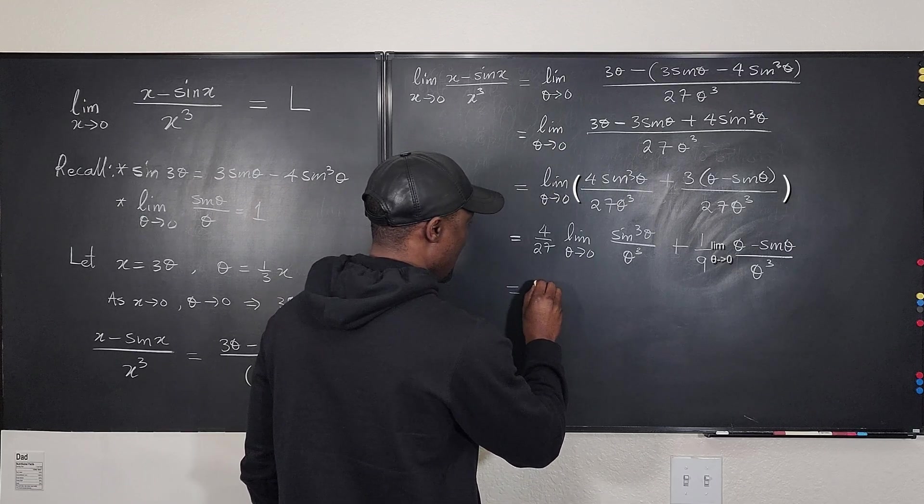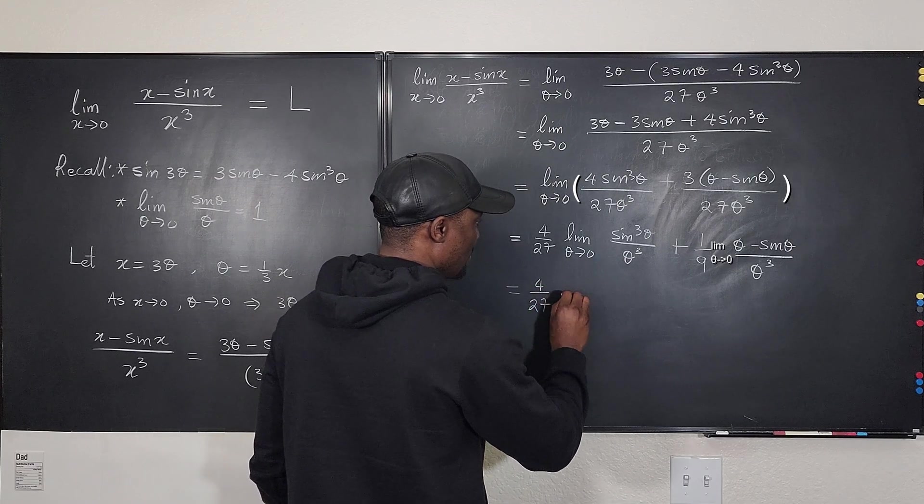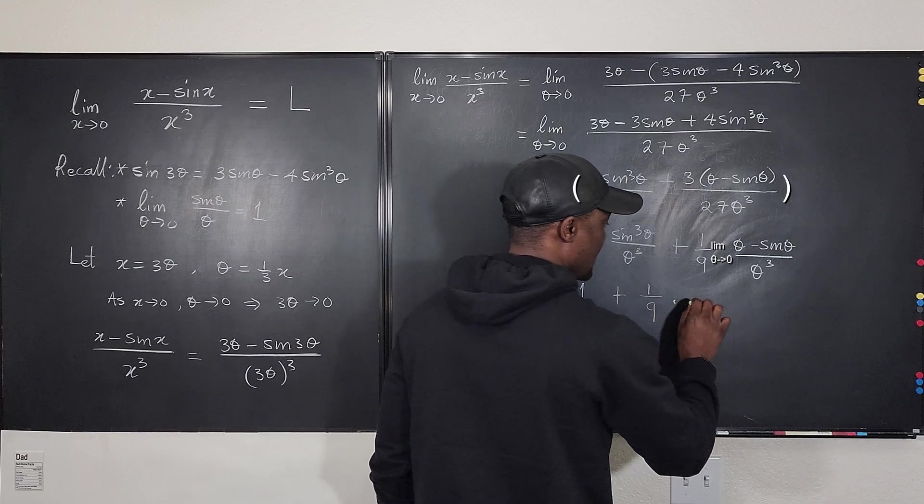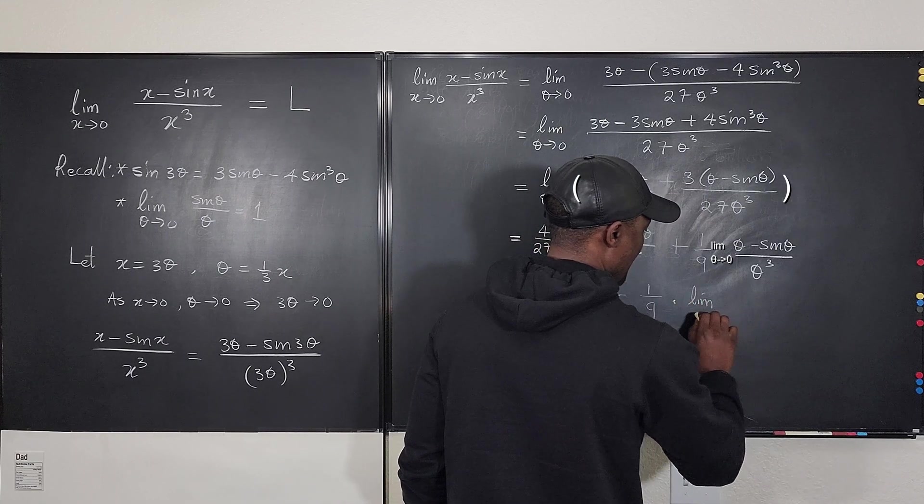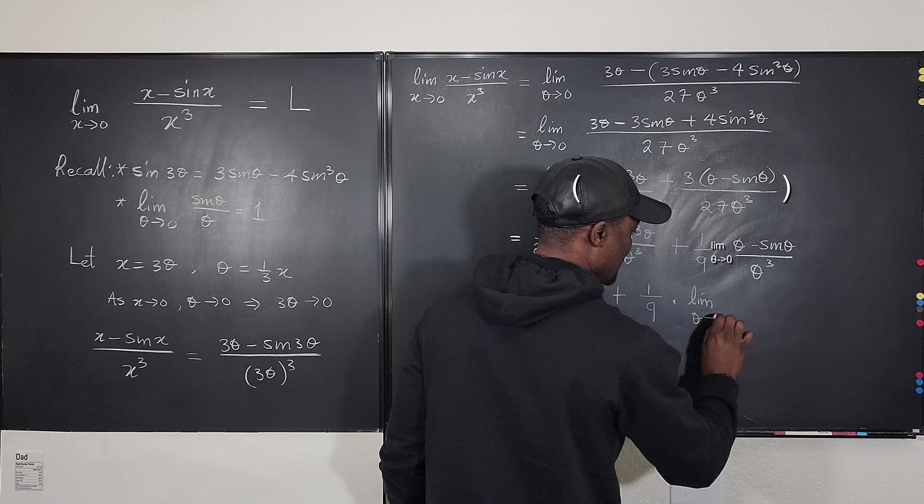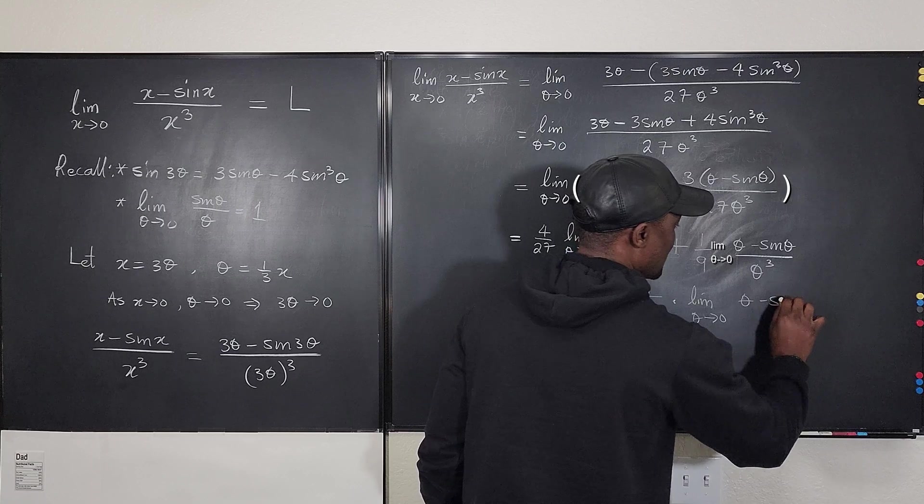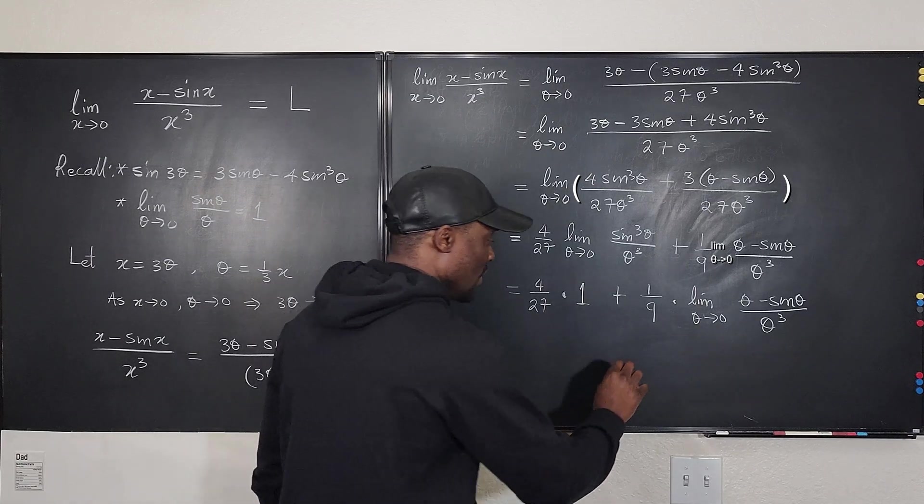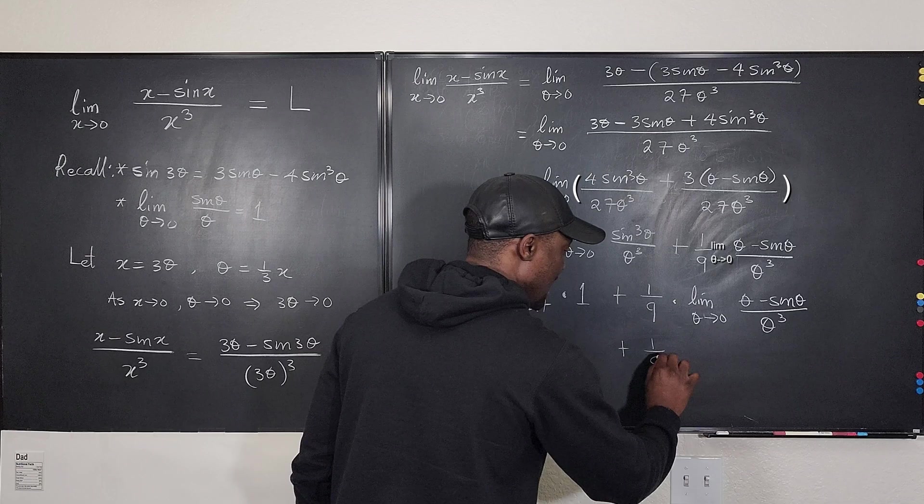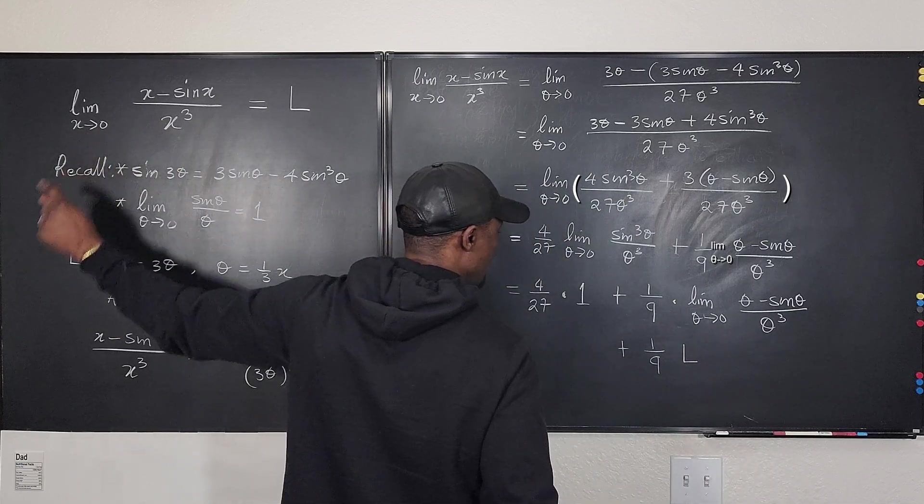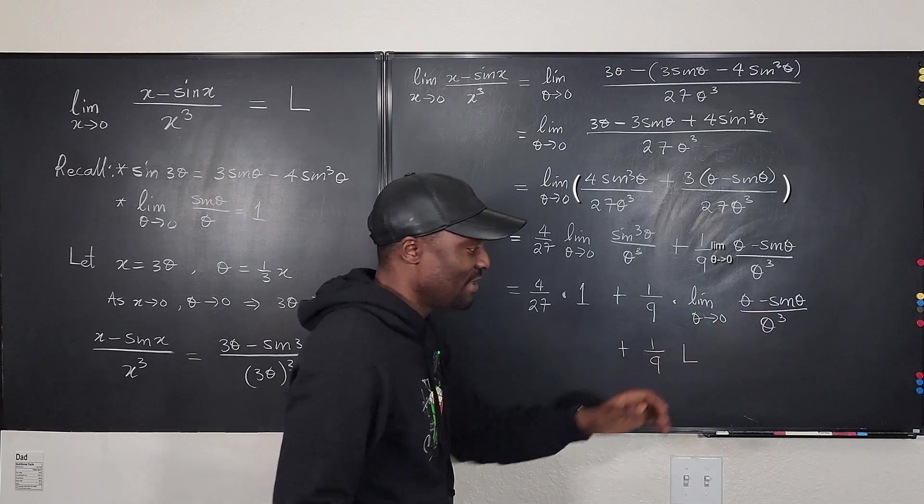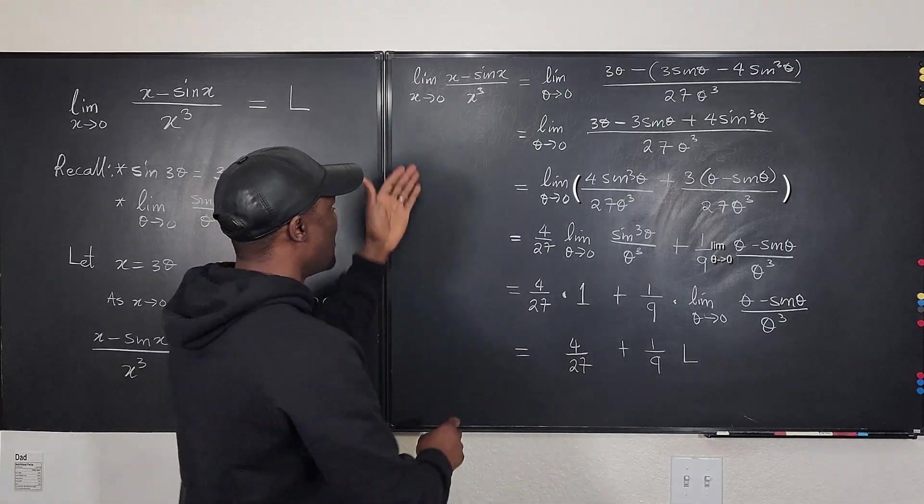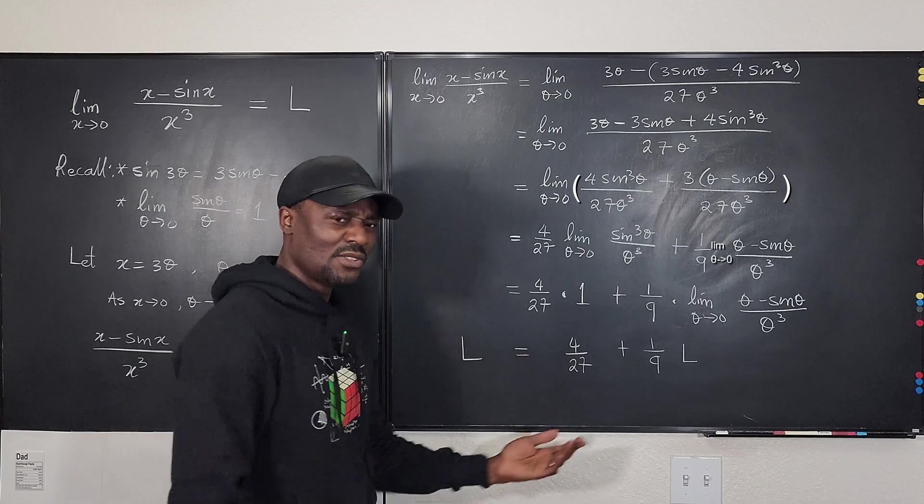So this is going to be equal to 4 over 27 multiplied by this limit is 1 plus 1 over 9 multiplied by the limit. As theta goes to 0 of theta minus sine theta over theta cubed, which we said at the beginning should be L. So it looks like here we have 1 over 9 times L, which is what we had at the beginning, just using a different letter, or variable, and this is going to be 4 over 27. And on the left, what do we have is a problem, which is the same limit, L.